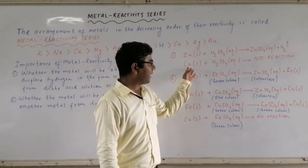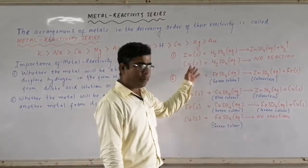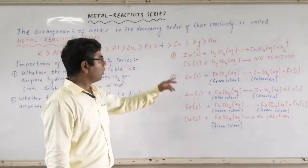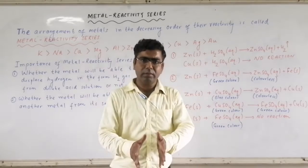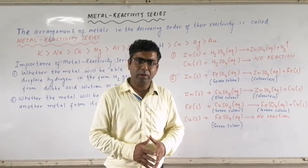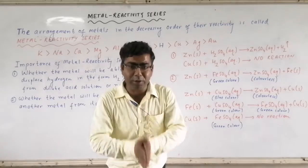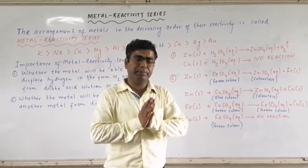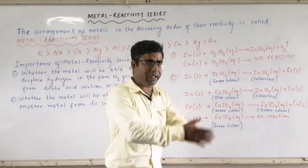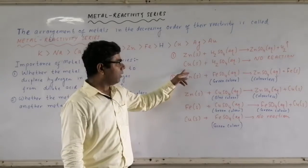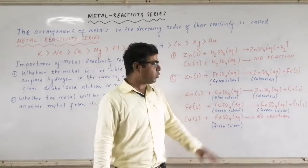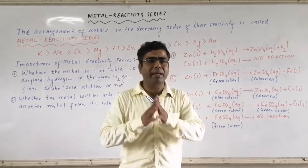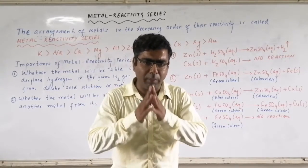Second case: copper turnings with dilute H₂SO₄. Compare the reactivity — copper is located on the right-hand side of hydrogen in the series, so copper is less reactive than hydrogen. A less reactive element cannot displace a more reactive element from its compound. Therefore, copper with H₂SO₄: since copper is less reactive than hydrogen, copper will not be able to displace hydrogen. As a result, no chemical reaction occurs and no bubbles will be observed in the beaker.